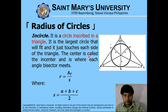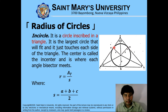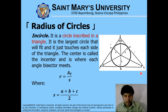The incircle is a circle inscribed in a triangle — the largest circle that will fit and just touches each side of the triangle. Its center is called the incenter, where each angle bisector meets. The radius of this circle is the area of the triangle divided by S, where S is the semi-perimeter: A plus B plus C over 2.